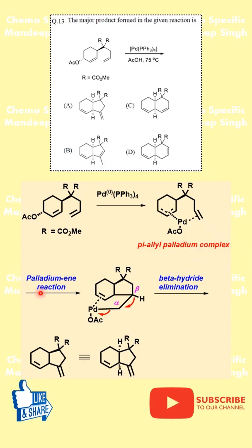Now comes the key step — a palladation reaction. The palladium migrates intramolecularly across the nearby alkene, forming a new carbon-carbon bond and a sigma-allyl palladium intermediate. This step fixes the ring fusion and relative stereochemistry.